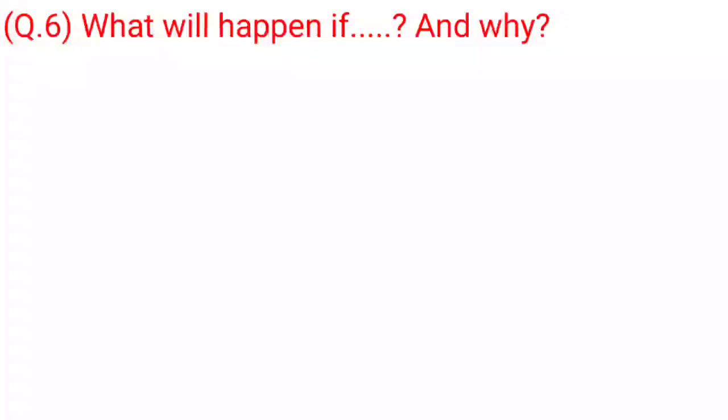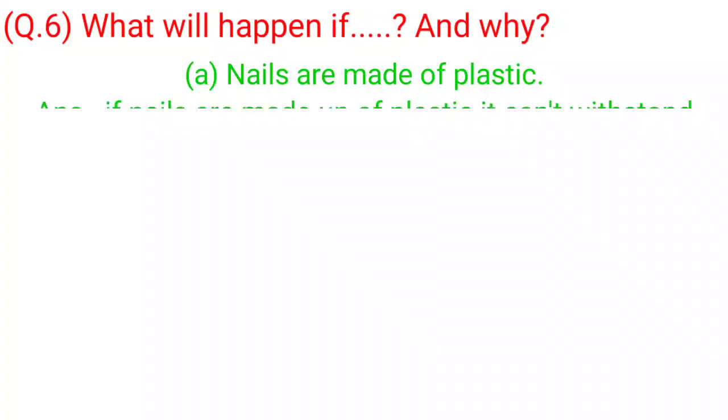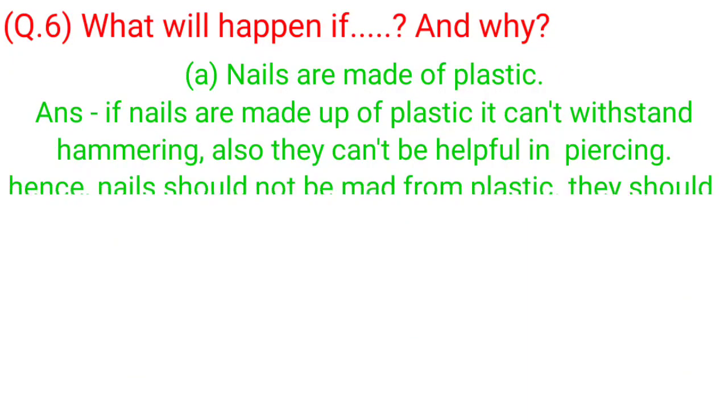Question 6: What will happen if, and why? A. Nails are made of plastic. Answer: If nails are made of plastic, it can't withstand hammering. Also, they can't be helpful in piercing. Hence, nails should not be made from plastic. They should be made from metal.